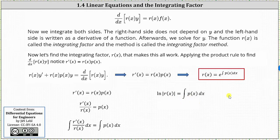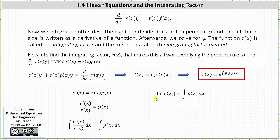The next step is to solve for r of x, which we can do two ways. One way is to write the log equation as an exponential equation: since we have natural log, we have log base e, so e raised to the power of the integral on the right equals the absolute value of r of x. Since e to a power is always positive, we can drop the absolute value. The other option is to exponentiate both sides with base e, giving e to the power of the natural log of the absolute value of r of x equals e to the power of the integral, which simplifies to r of x equals e to the power of the integral of p of x dx. This is the integrating factor.